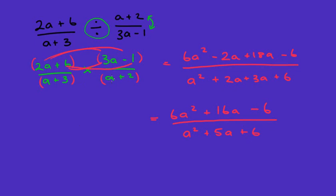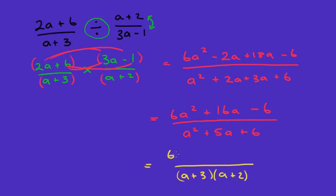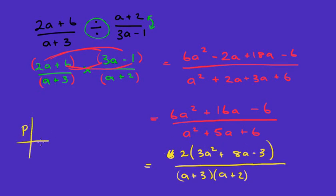Often it's better not to expand the bottom when it's already in factored form, since we might be able to cancel later. Combining the numerator: six a squared, negative two a plus eighteen a is positive sixteen a, minus six. Then simplifying, two goes into all of the numerator, giving three a squared plus eight a minus three, all over (a + 3)(a + 2).